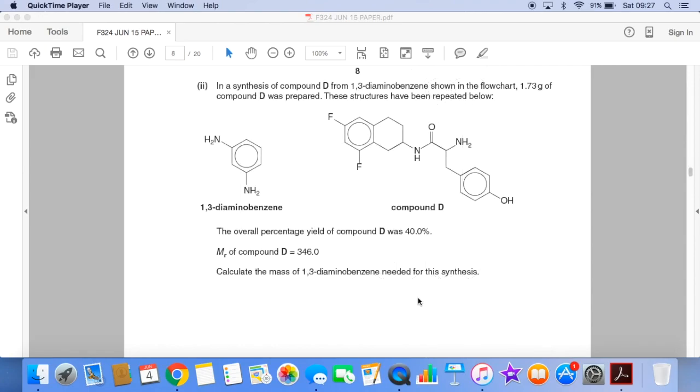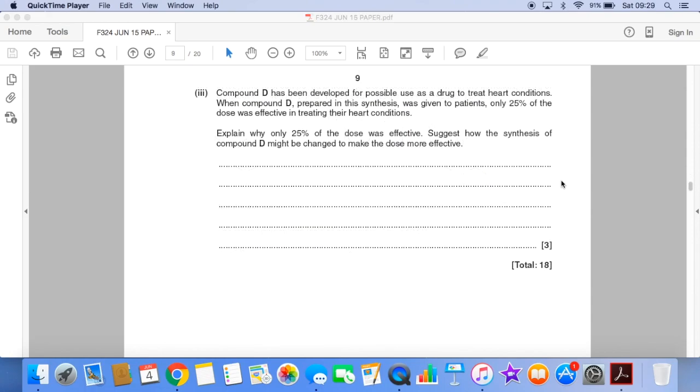Now a quick calculation. In the synthesis of compound D from the 1,3-diaminobenzene, 1.73 grams of D was prepared. The overall percentage yield of compound D is 40%. We're told the MR of D is 346.0. And we have to work out what mass of 1,3-diaminobenzene would be needed to carry out that synthesis.